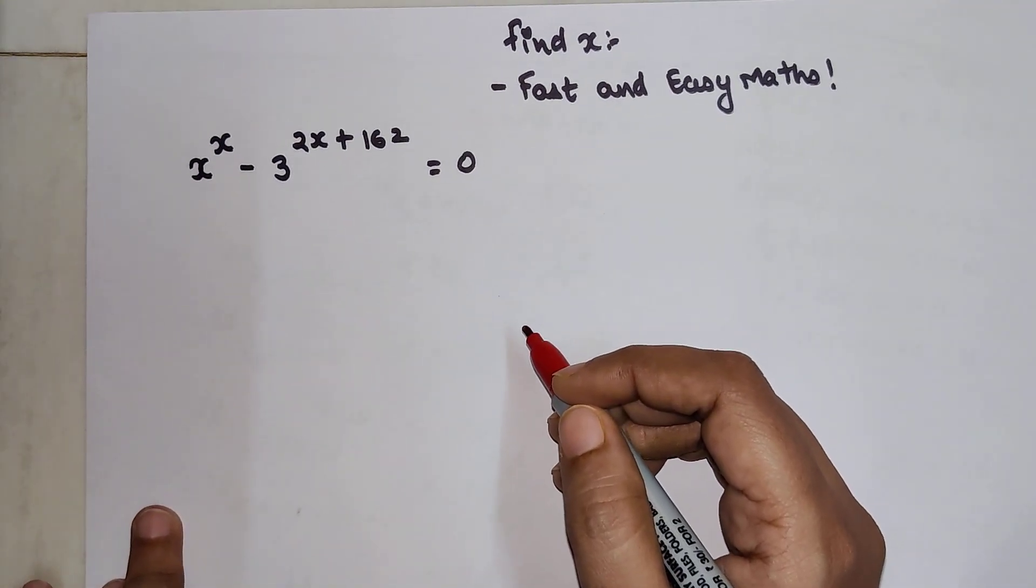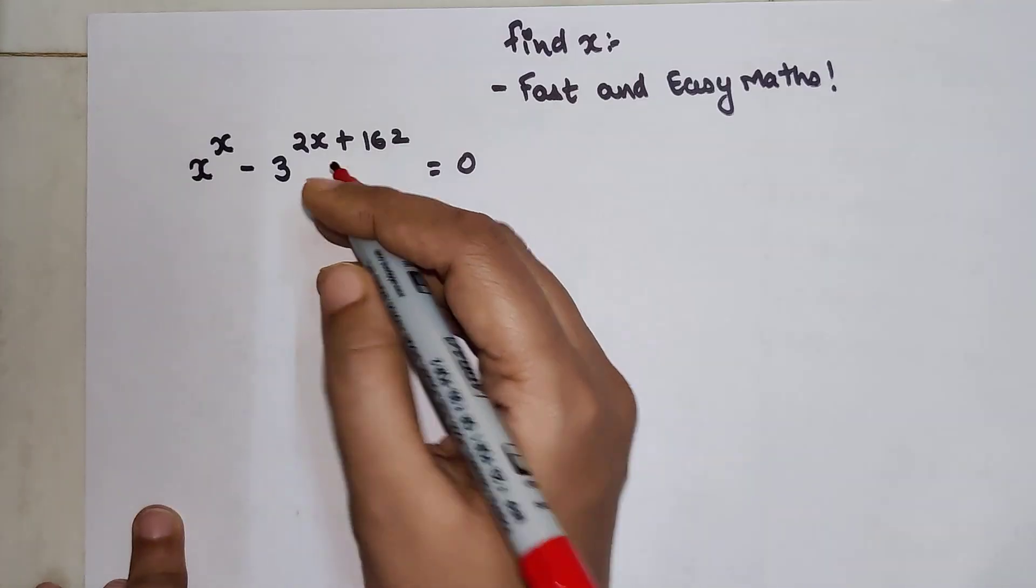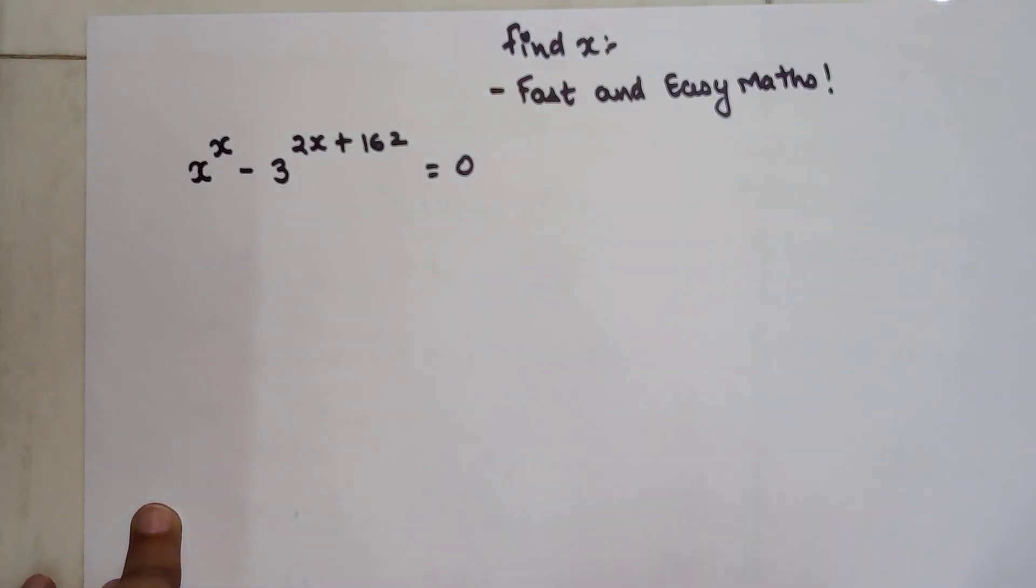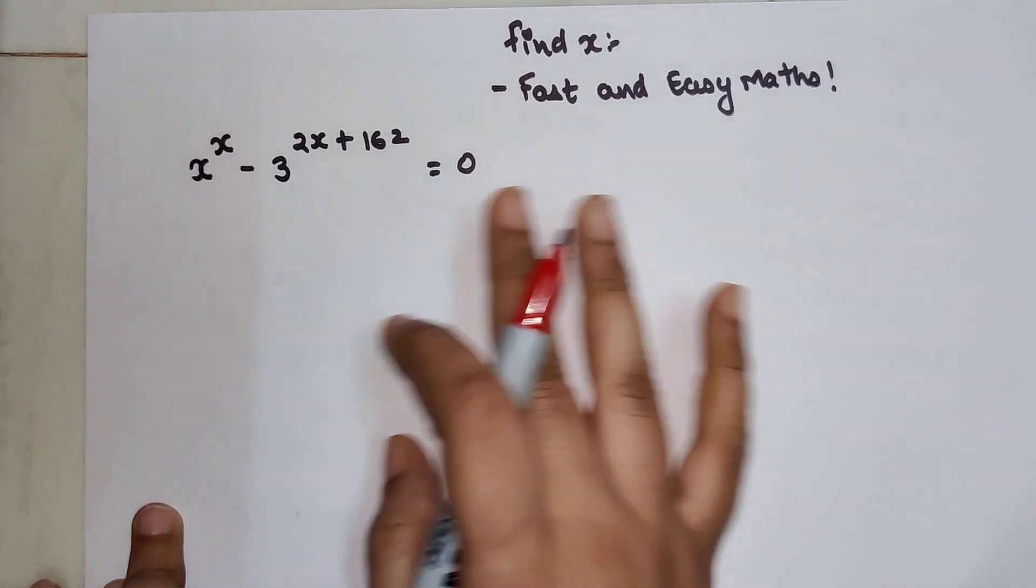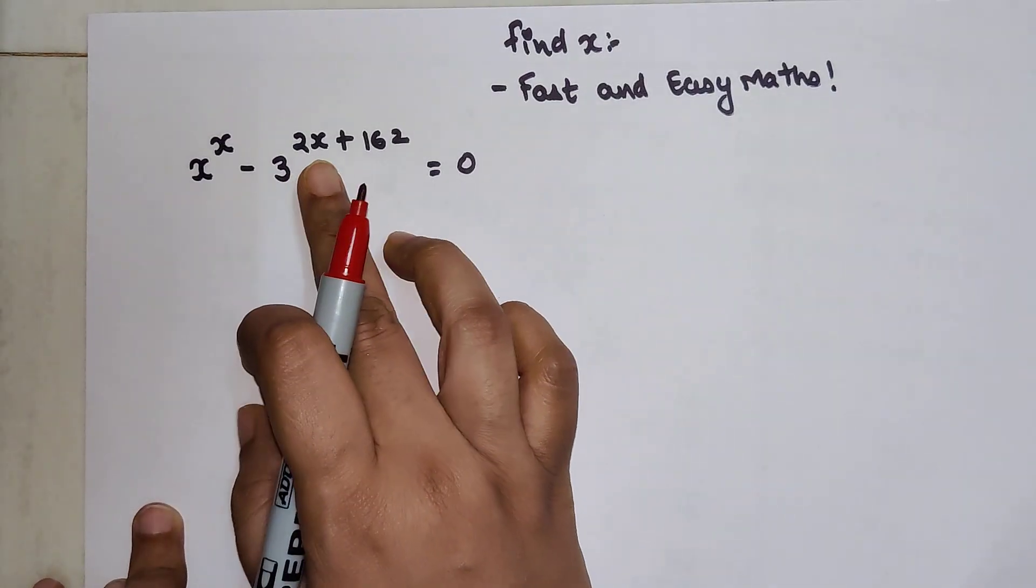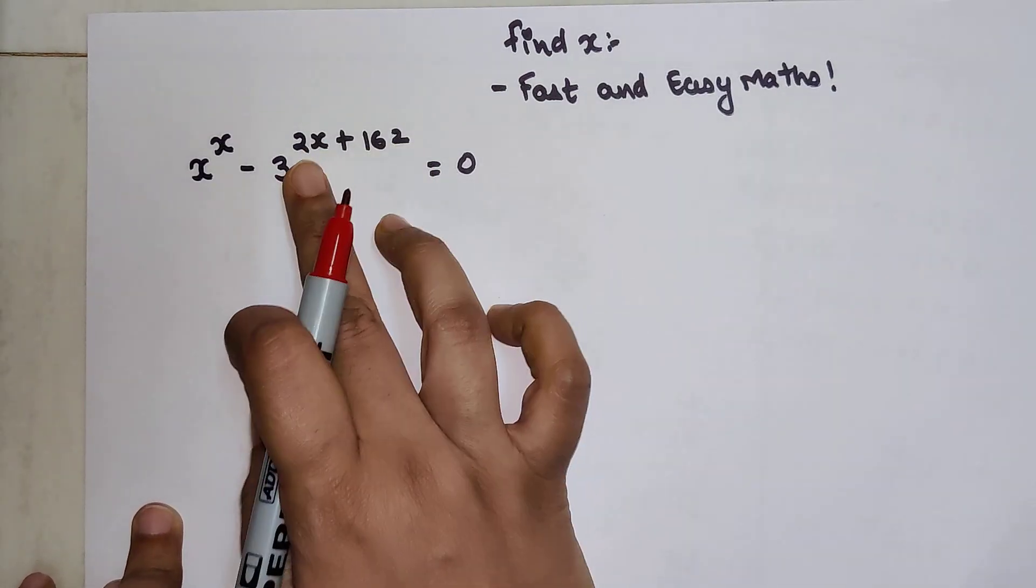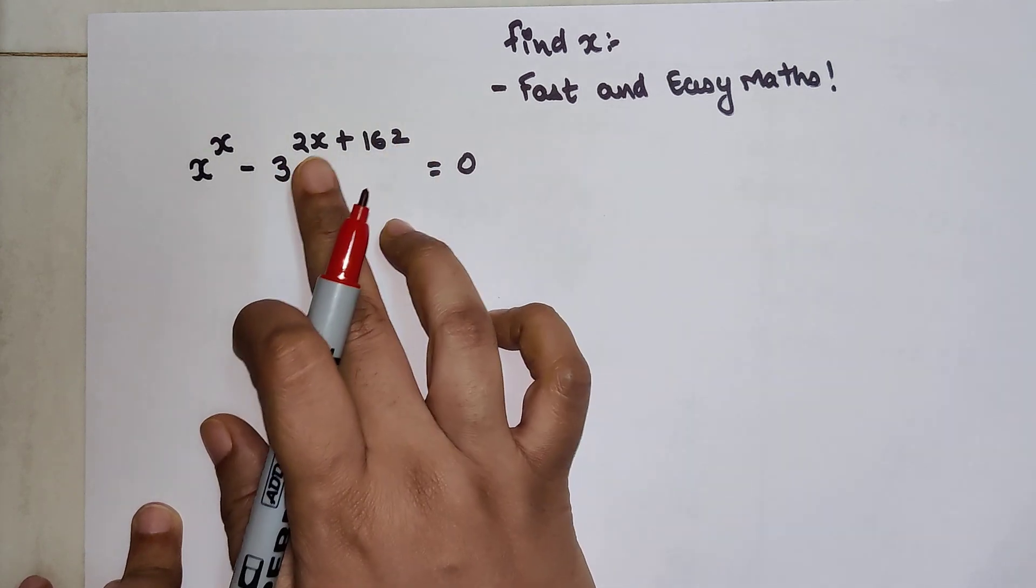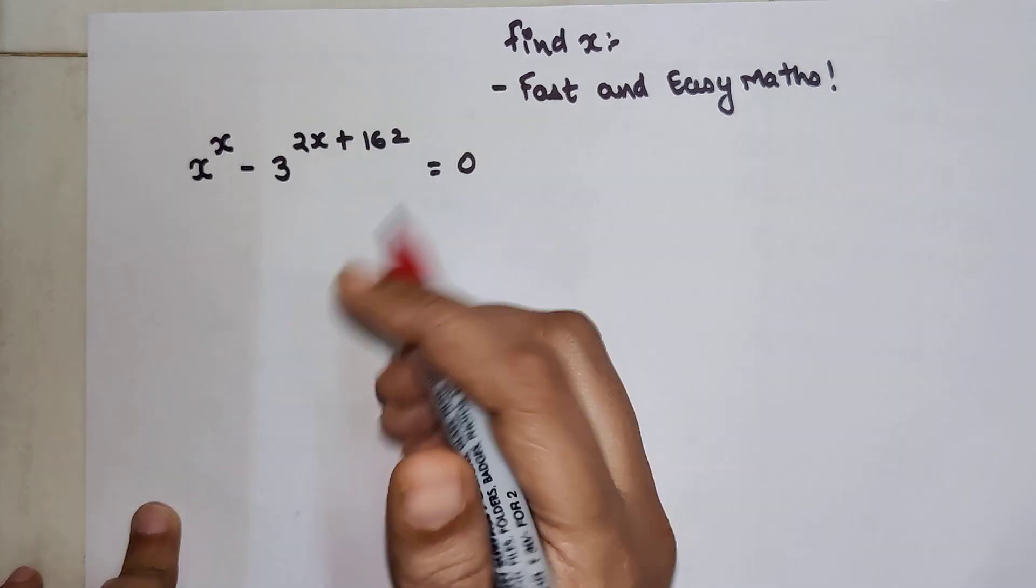Whenever you come across something like this, all you have to do is start with the first step, which is very basic. So here I know I can't simplify anything, so I can take 2 outside the indices of 3 because both of these are even numbers.